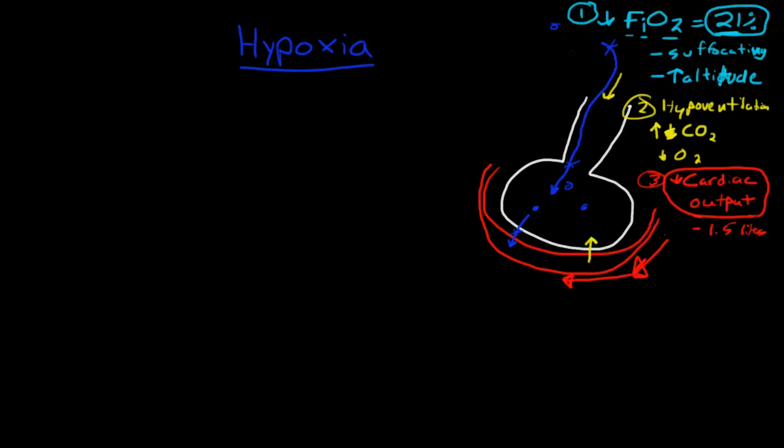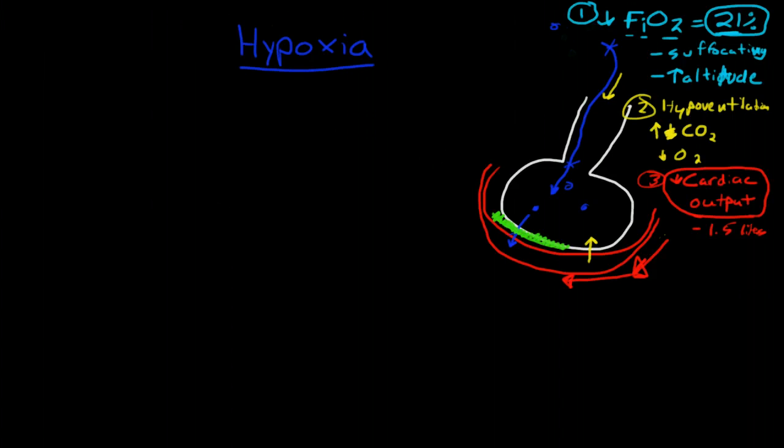Now, another possibility is we could have impairment of this membrane. So if we have thickening of the alveolar capillary membrane, remember oxygen is diffusing down its concentration gradient by simple diffusion. And this works very well because usually the membrane is 0.2 nanometers thick.